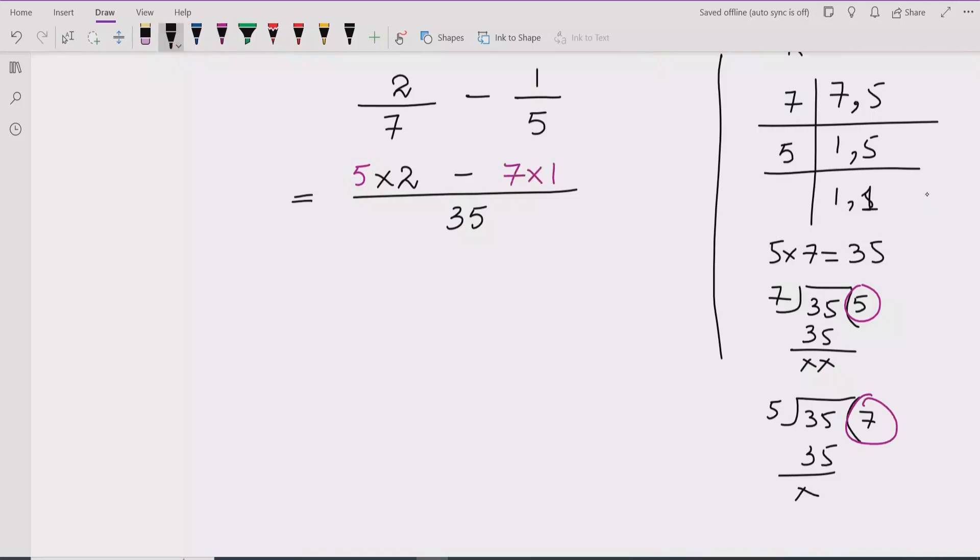Now we will simplify. 5 times 2 is 10 minus 7 times 1 is 7 and divided by 35. So here we will simplify 10 minus 7 is 3 and divided by 35.